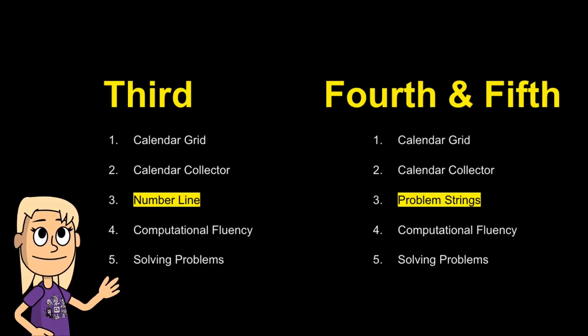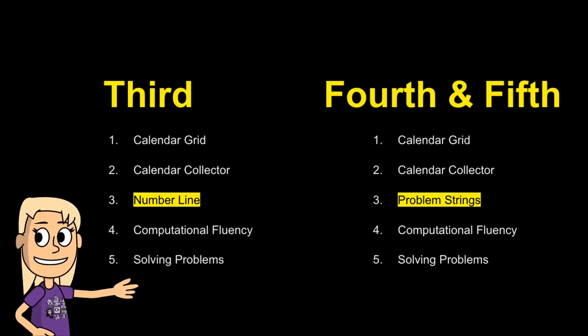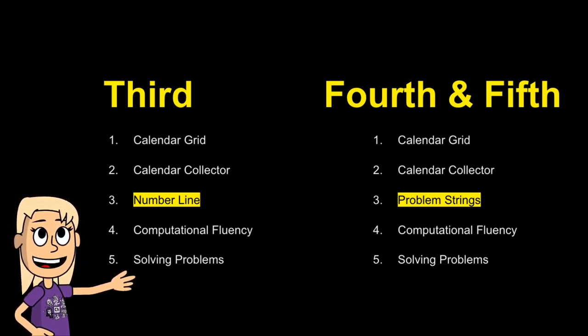In third grade, you've got the calendar grid, the calendar collector, and you have a Number Line plus computational fluency and solving problems. But over there in fourth grade, you can see that you've got the same Number 1 and Number 2, but on Number 3, instead of the Number Line, you've got problem strings. That's really the difference between the third grade Number Corner and the fourth grade and fifth grade Number Corner.